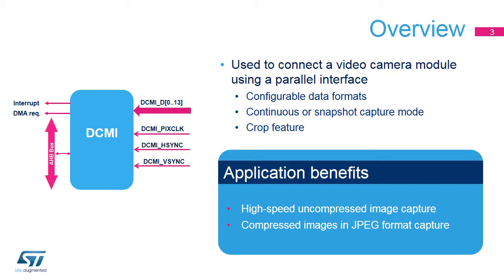The DCMI interface is used to connect a parallel camera module to the STM32. The camera generates a parallel data flow together with a pixel clock signal, DCMI PIX clock, which allows the interface to capture the incoming data flow. Two optional signals, H-Sync and V-Sync, may be used to synchronize the image frame between the camera and the STM32. The DCMI also supports line-and-frame synchronization code in the data flow.